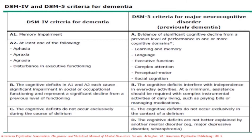In DSM-5 criteria for major neurocognitive disorder, there is evidence of significant cognitive decline from a previous level of performance in one or more cognitive domains: learning and memory, language, executive function, complex attention, perceptual motor, and social cognition. The cognitive deficits must interfere with independence in everyday activities — at minimum, assistance is required with complex instrumental activities of daily living such as paying bills or managing medications. Cognitive deficits do not occur exclusively in the context of delirium and are not better explained by another mental disorder such as major depressive disorder or schizophrenia.